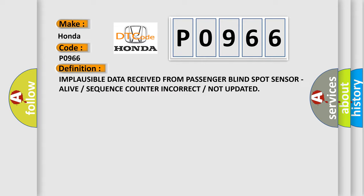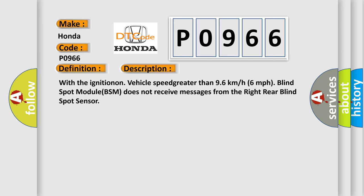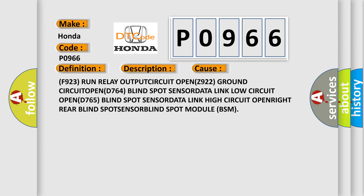Here is a short description of this DTC code. With the ignition on and vehicle speed greater than 96 km/h (60 miles per hour), the blind spot module (BSM) does not receive messages from the right rear blind spot sensor. The diagnostic error occurs most often due to faults in: F923 run relay output circuit open, Z922 ground circuit open, D764 blind spot sensor data link low circuit open, D765 blind spot sensor data link high circuit open, or a right rear blind spot sensor failure.